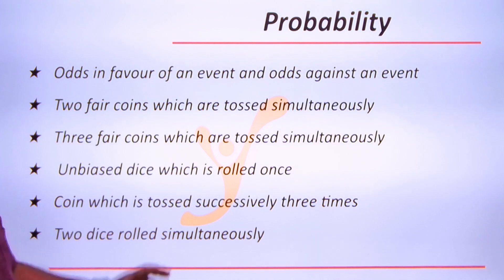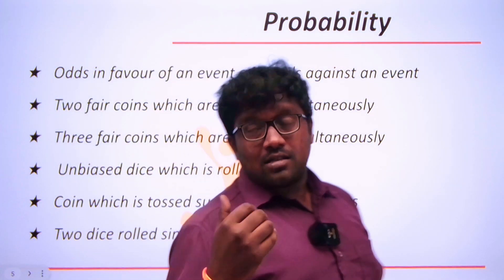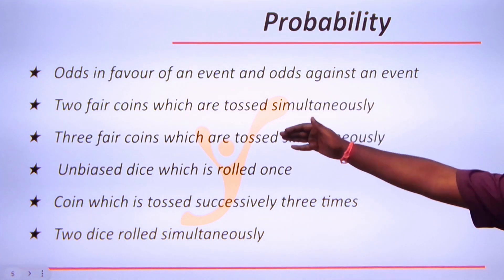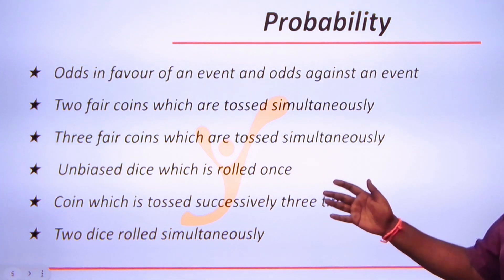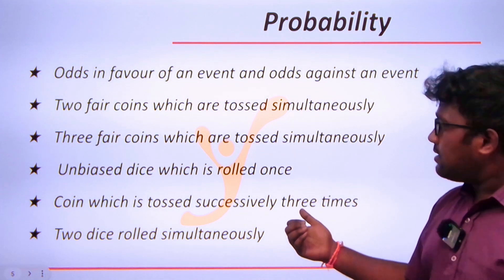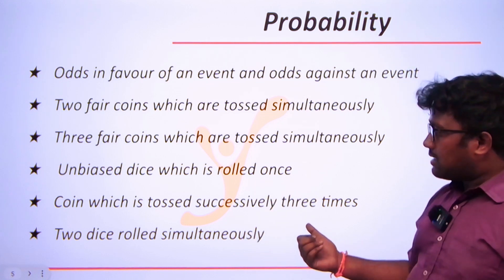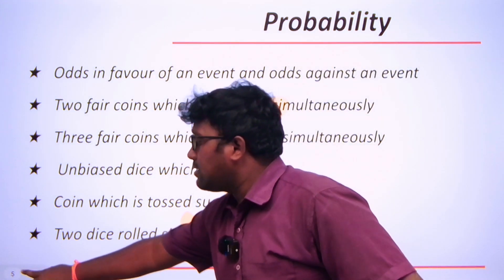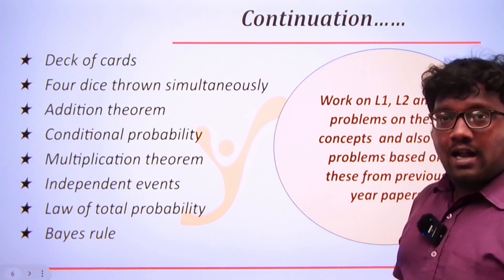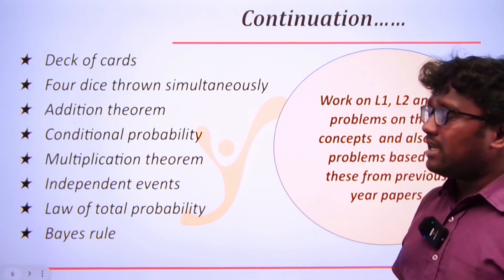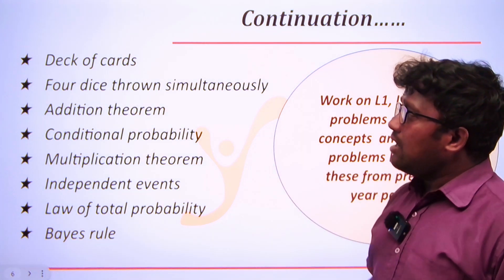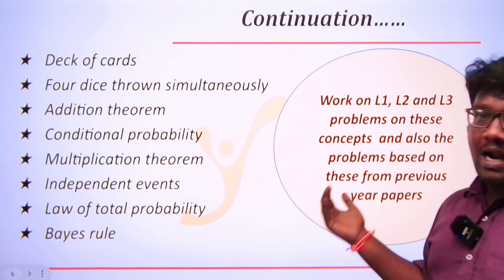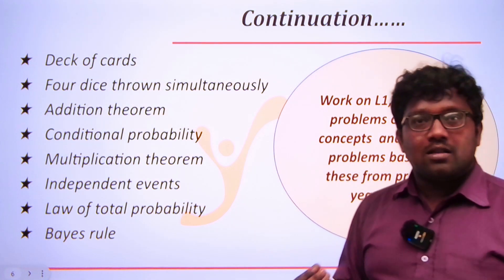The next topic is probability. Focus on these areas: odds in favor of an event and odds against an event; two fair coins tossed simultaneously; three fair coins tossed simultaneously; a die rolled once; a coin tossed successively three times; two dice rolled simultaneously; a deck of cards; and four dice thrown simultaneously. Also focus on the addition theorem, conditional probability, multiplication theorem, independent events, the law of total probability, and Bayes' rule.